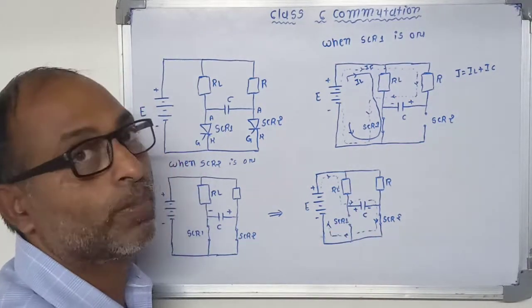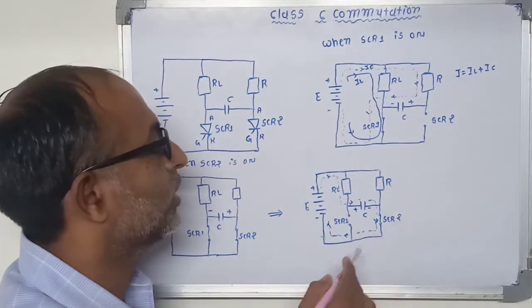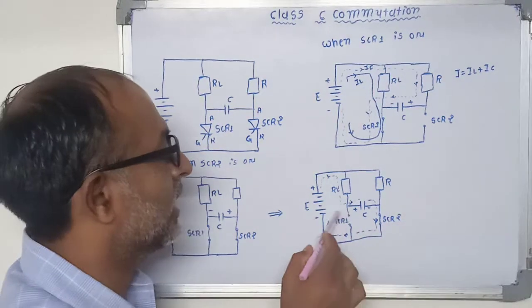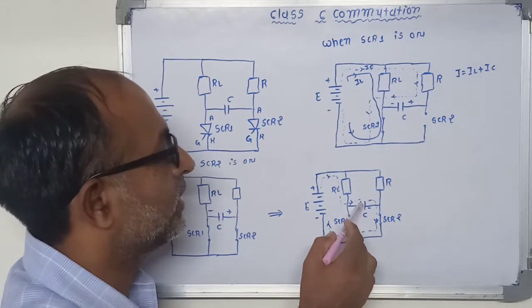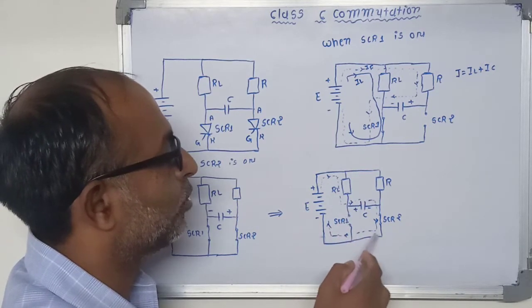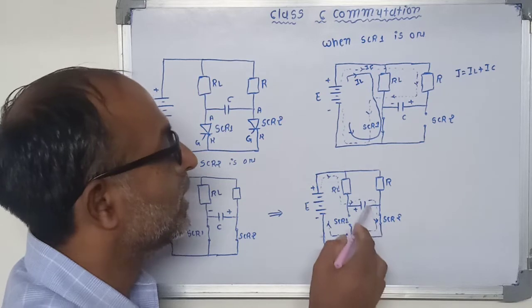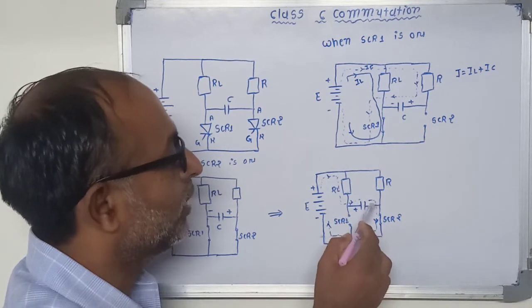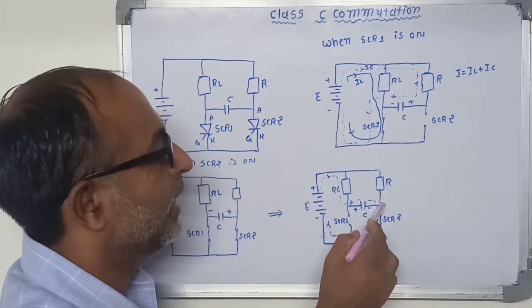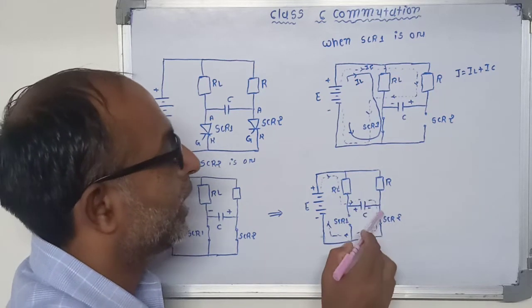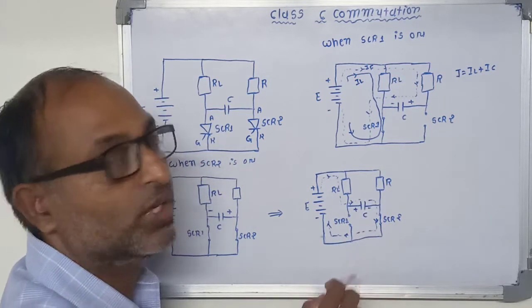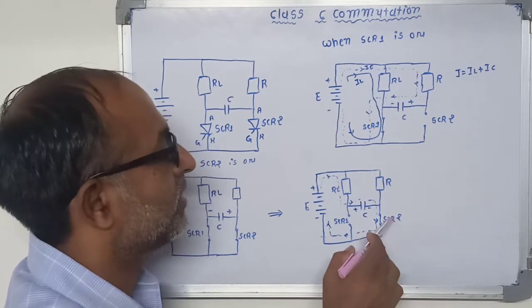So now if I want to turn off this SCR2 then triggering pulse applied to the SCR1 which may turn on the SCR1. So this positive plate is connected to the cathode terminal of SCR2 and negative terminal is connected to the anode of the SCR2. That means reverse voltage appears across this SCR2 which may turn off the SCR2.